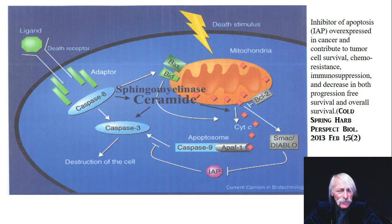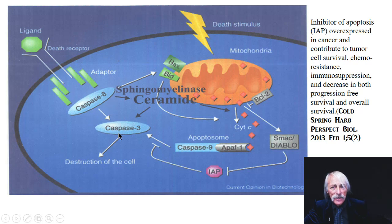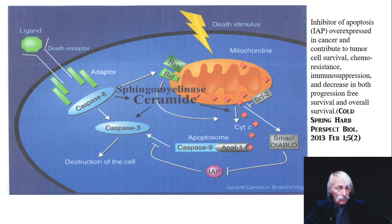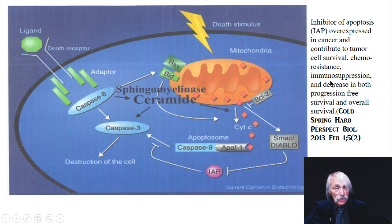This cartoon shows what happens normally: a death ligand binds to a death receptor — like PDL/PDLR — turning on caspase. Caspase ultimately causes apoptosis, but also you generate sphingomyelinase activity making ceramide, which super-activates the caspase-3 pathway. Using both the mitochondrial-mediated and direct cytoplasmic apoptosis pathways, you kill that cell.